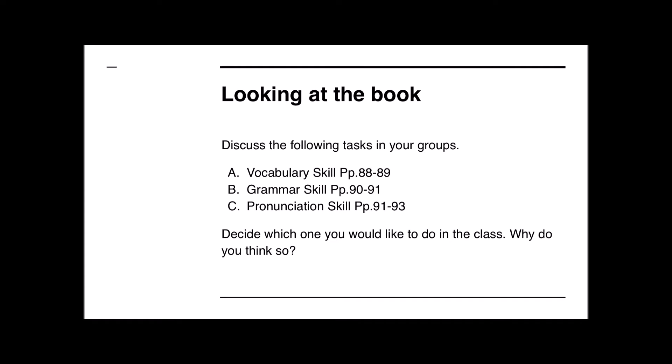Now I want us to go to the book. There are three things I want to focus on in this unit. The first is vocabulary on page 88. Then it's grammar skills on page 90, which I believe will be in the test as well. And then there's pronunciation skills on page 91. We're going to start from page 88 and go all the way through to page 93. Let's start with the vocabulary skills.